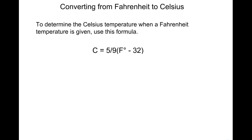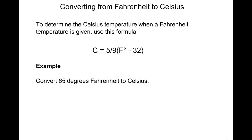The degrees Celsius is equal to 5/9 times the temperature in Fahrenheit minus 32. For example, convert 65 degrees Fahrenheit to Celsius. First, you take 5/9 times the quantity 65 minus 32, which results in 0.555 times 33. The result of that is 18.3 degrees Celsius.